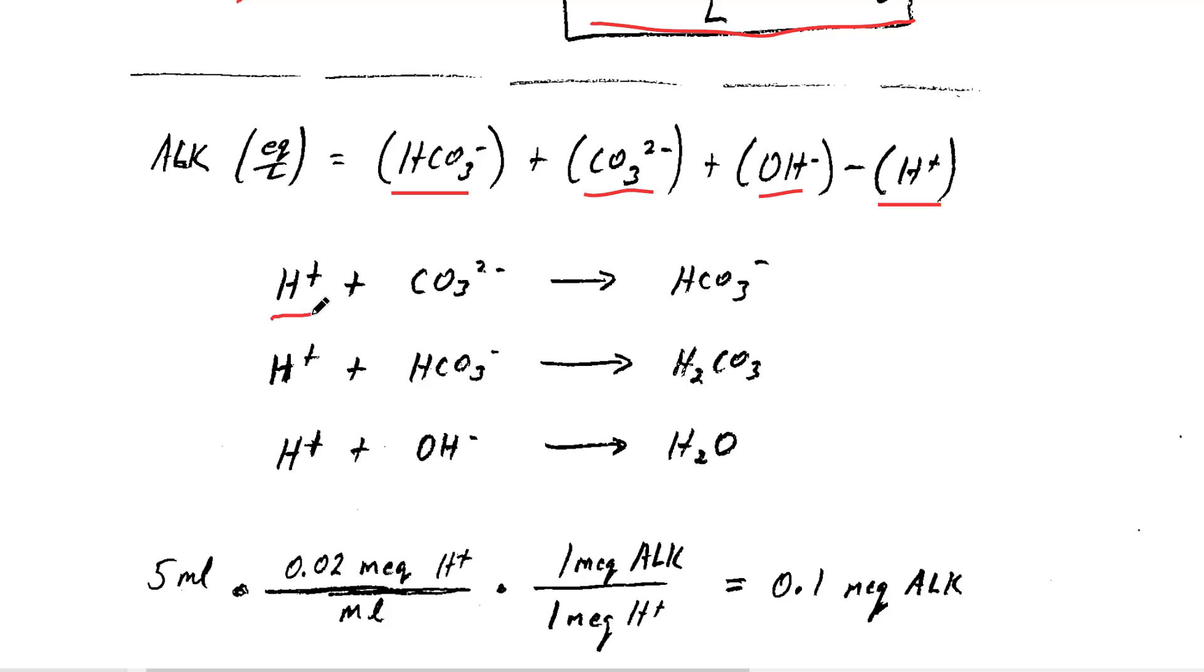When we add hydrogen ion from the sulfuric acid into the solution, it reacts with carbonate to give us bicarbonate. It reacts with bicarbonate to give us carbonic acid, and it reacts with hydroxide to give us water. Notice that bicarbonate and water are not part of the alkalinity equation, so we have effectively converted alkalinity into non-alkalinity components.